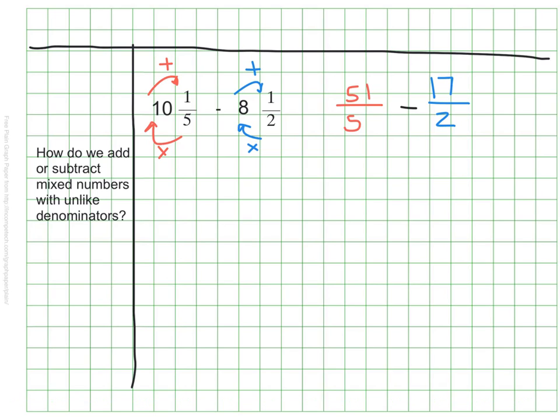How'd you do? I said that 10 and one-fifth was equivalent to 51 fifths, and 8 and a half is equivalent to 17 halves. I would like to continue from here, but I noticed, once again, they don't have the same denominator, so I need to find a common denominator before I can continue. I need to find the common denominator by looking at the least common multiple. 5 and 2 have a least common multiple of 10, so I'm going to start there.